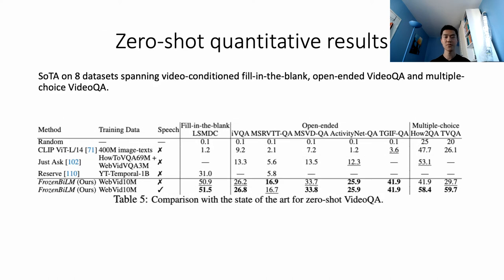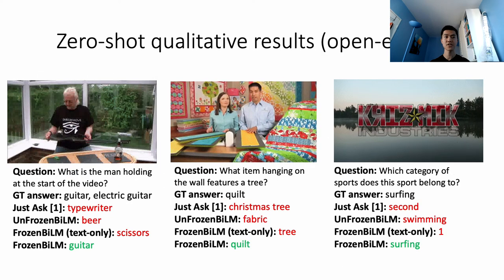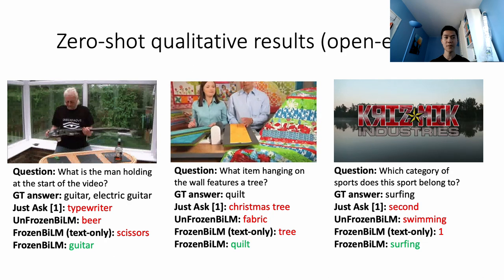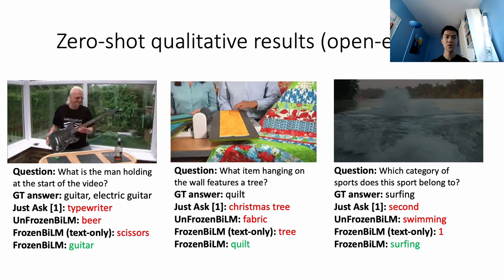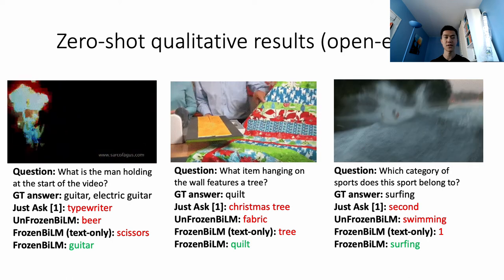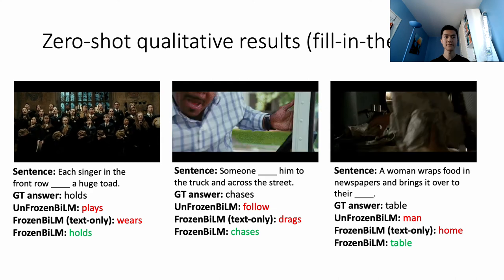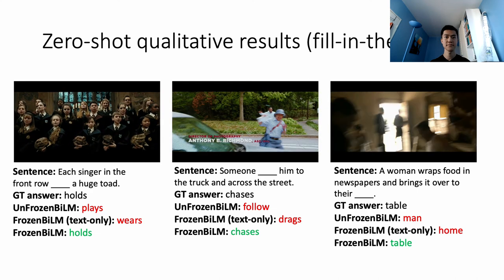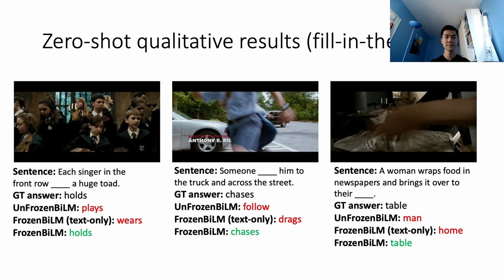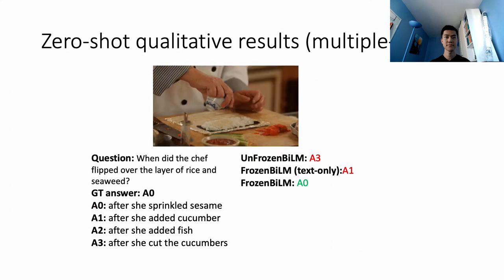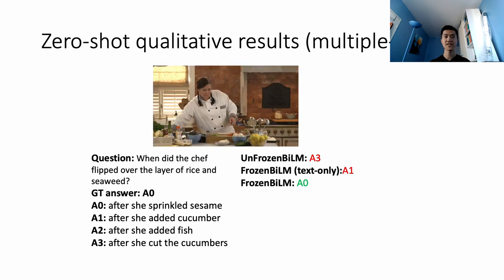Our approach, FrozenBiLM, largely improves the zero-shot state-of-the-art on 8 datasets, spanning video cloze fill-in-the-blank, open-ended video QA, and multiple choice video QA. Qualitative examples show the strong zero-shot capabilities of FrozenBiLM on these various tasks, compared to its unfrozen variant, the text-only baseline, and previous work. Additional examples are shown in a separate video available on our webpage.